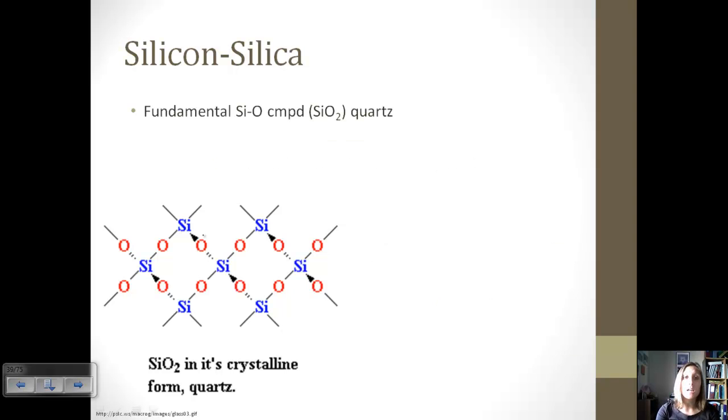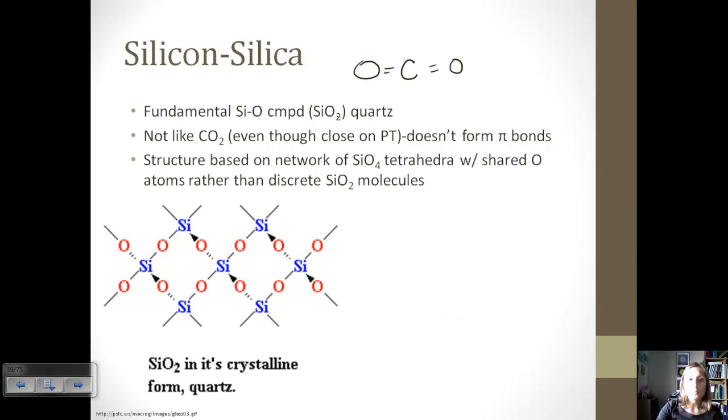One of the forms of silicon is silica. And so the fundamental component of this is called quartz, which is SiO2. And even though silicon and carbon are close to each other, so SiO2 and then CO2 on the periodic table, they are not similar at all. CO2 forms double bonds. If we look at CO2, we've got these double bonded oxygens, but that does not happen with silica.